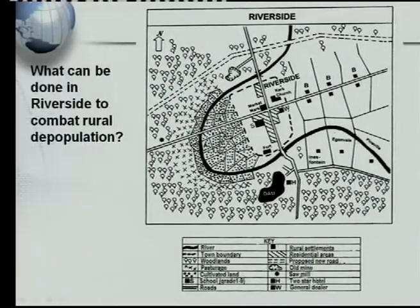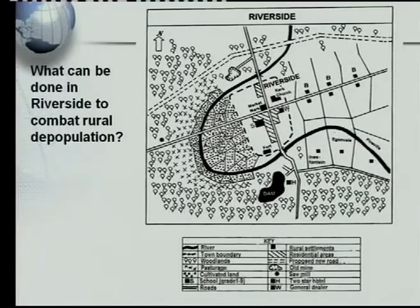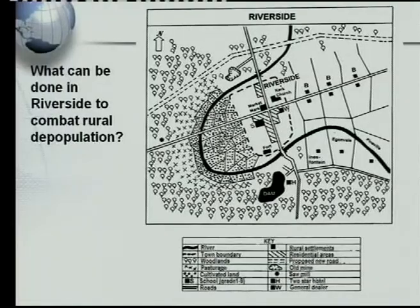Let's have a look at Riverside and see what can be done to combat rural depopulation. The big mistake that you people do is you look for the answers in the diagram itself. The answers are in the key. So let's have a look at this: what can be done to combat rural depopulation? If you only look at the map, you're not going to find any answers. We must see what we've got in our key — is there anything in the key that we can use?